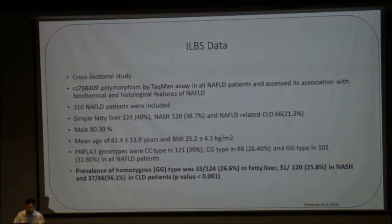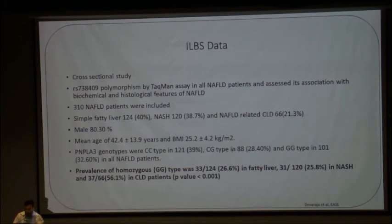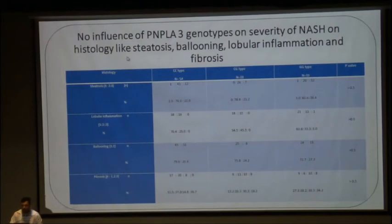Coming to the ILBS data, presented at EASL by Dr. Devaraj: 310 patients were included, of which 124 patients had simple fatty liver disease, NASH was noted in 120 patients, and NAFLD-related cirrhosis was seen in 66 patients. 80% of the population was male, with a mean age of 42 and a BMI of 25. PNPLA3 genotypes noted were CC in 121, CG in 88, and GG in 32% of NAFLD patients. The prevalence of the homozygous GG allele was 26% in fatty liver, 25% in NASH, and 56% in cirrhosis patients, which was significant. However, there was no influence of PNPLA3 genotype on the severity of NASH histology including steatosis, ballooning, or lobular inflammation.